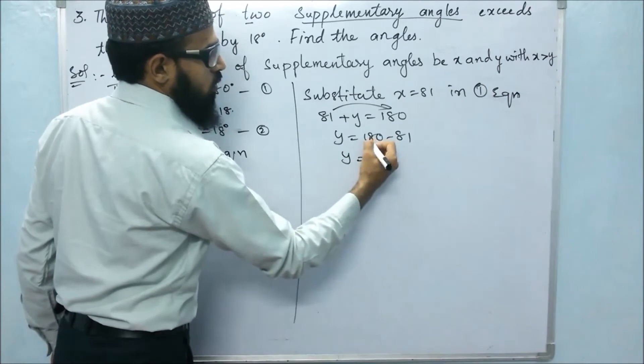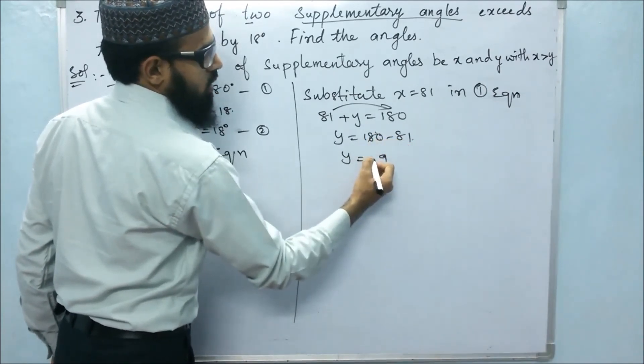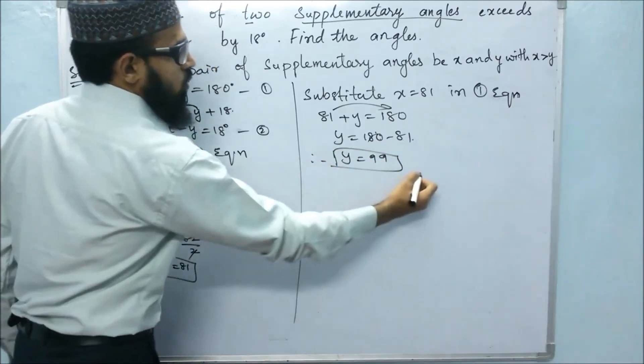So y equals 10 minus 1, 9, and 17 minus 8 is 9. Therefore, y equals 99.